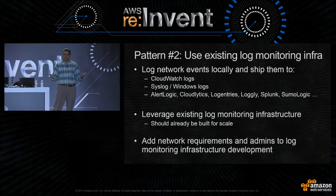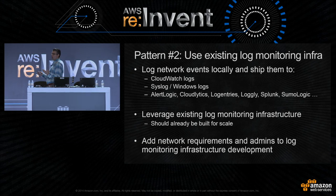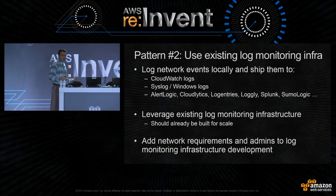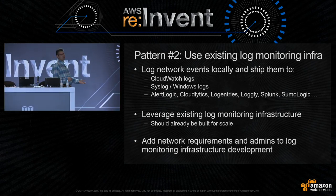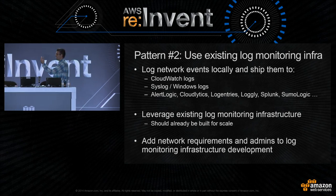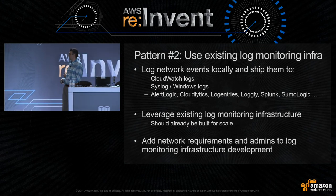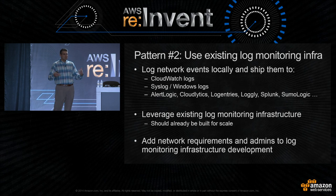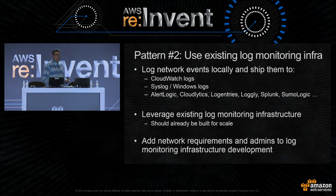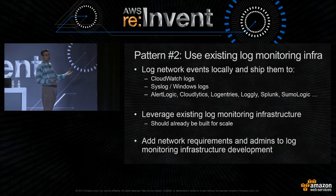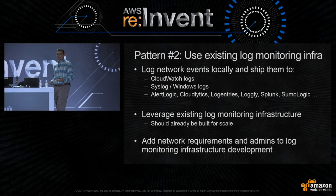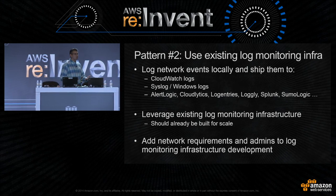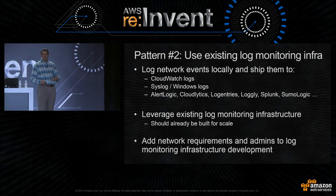A second pattern: you probably already have a monitoring or logging infrastructure to collect and analyze logs from servers. You can log network events locally and ship them to CloudWatch Logs, Syslog, Windows logs, or through partner solutions like AlertLogic, LogEntries, Splunk, or SumoLogic. Use your existing log infrastructure that's already built for scale — the disconnect as to why we don't use these tools historically is because of silos. If you add your networking requirements to your server log monitoring and give network admins access to those tools, it can be a very quick and easy way to get a lot more visibility.